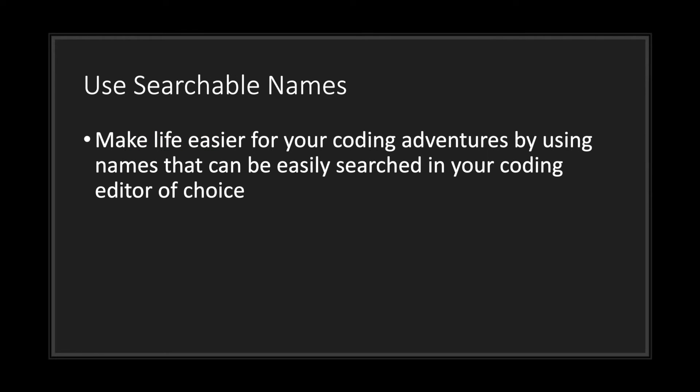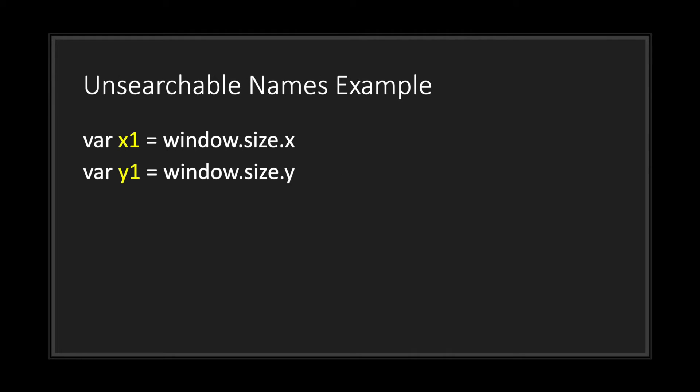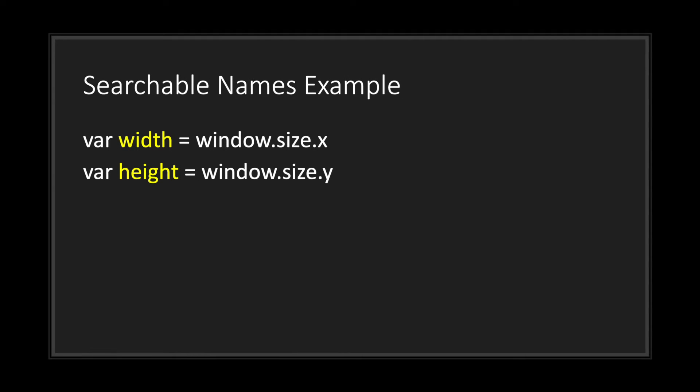One thing I suggest to make life easier on your coding adventures is using names that can be easily searched in your coding editor of choice. Let's take a look at an example. As you can see here, we have a variable X1, and that's not very searchable. On top of that, the name doesn't even explain the intent of our code.